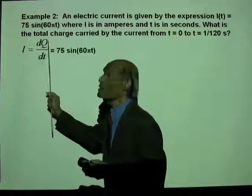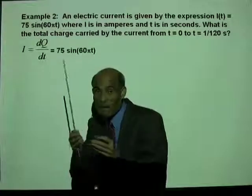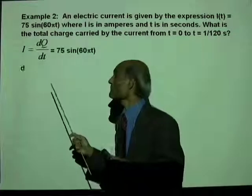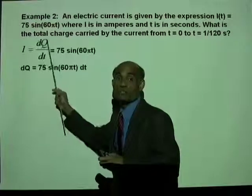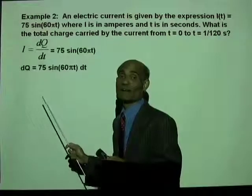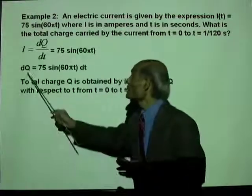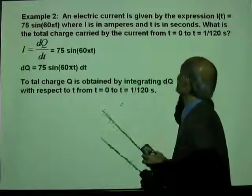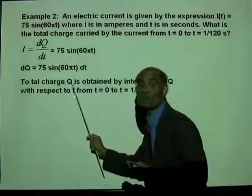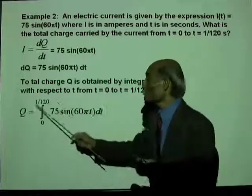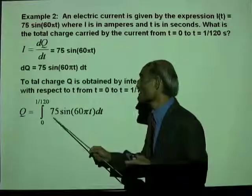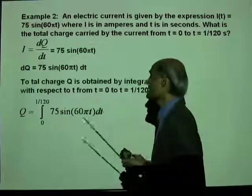We need to find the amount of charge that passes through the conductor during this time interval. We find DQ: DQ equal to 75 sine 60 pi T DT, and we now integrate DQ from T equal to zero to T equal to one over one hundred twenty. That gives the total charge Q: integral from zero to one over one hundred twenty of 75 sine 60 pi T DT.